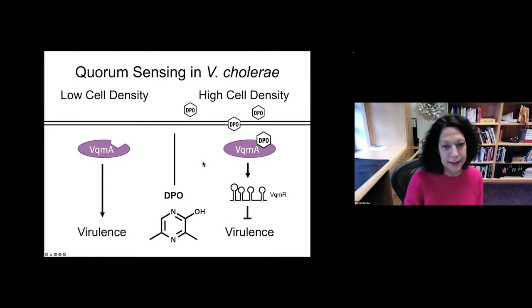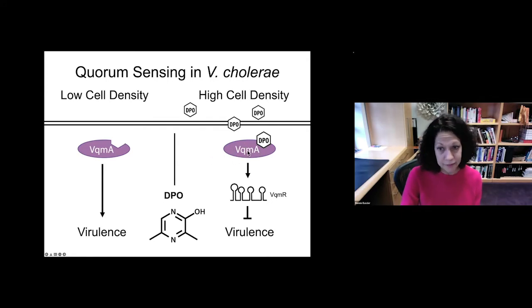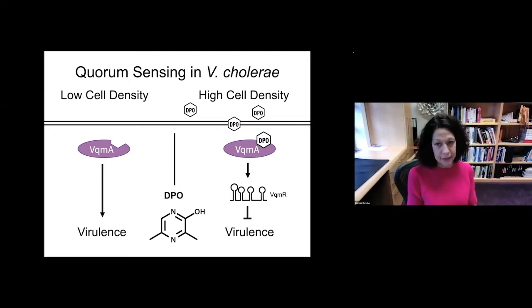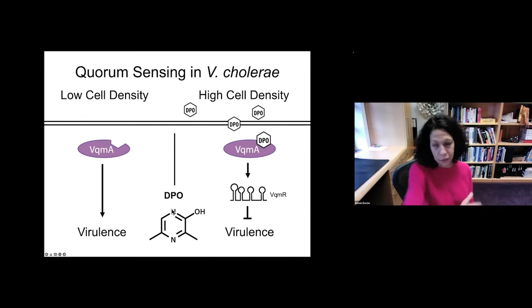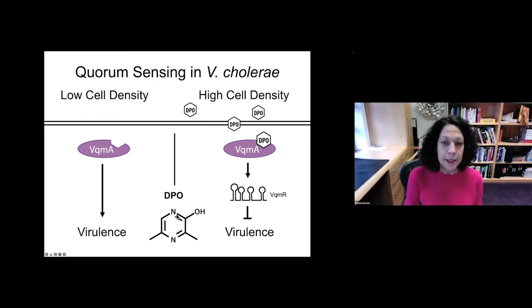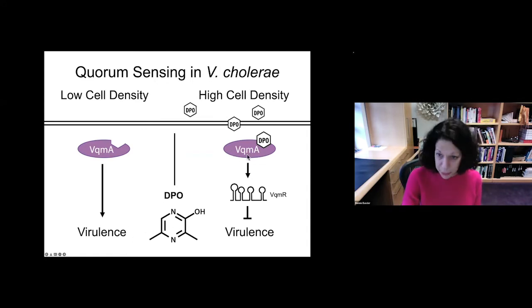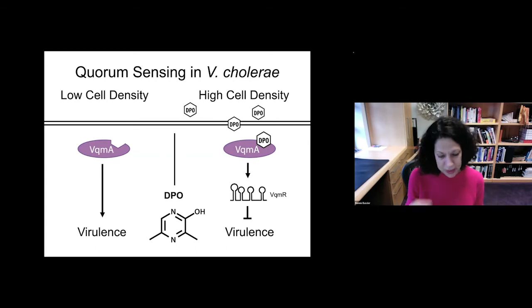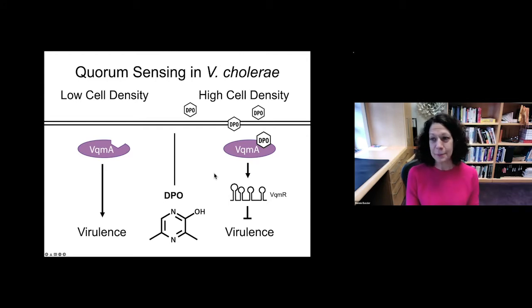When Justin had made those findings, he was trying to understand more about this new system and found an interesting asymmetry. He found that the VQMA receptor, this transcription factor, is present in every Vibrio, but no bacterium except Vibrios have that receptor. The molecule DPO, by contrast, was broadly made in the bacterial world — all kinds of bacteria make DPO. He was trying to understand the difference between production of the signal molecule and reception of the signal molecule.